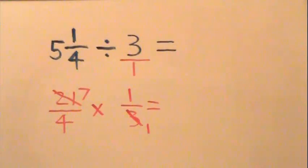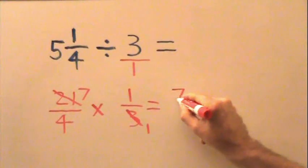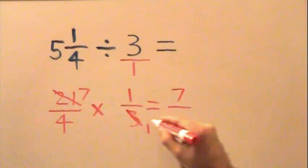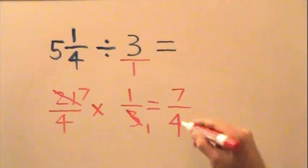Now, all we have to do is multiply across. 7 times 1 equals 7. 4 times 1 equals 4. And our answer is 7 fourths.